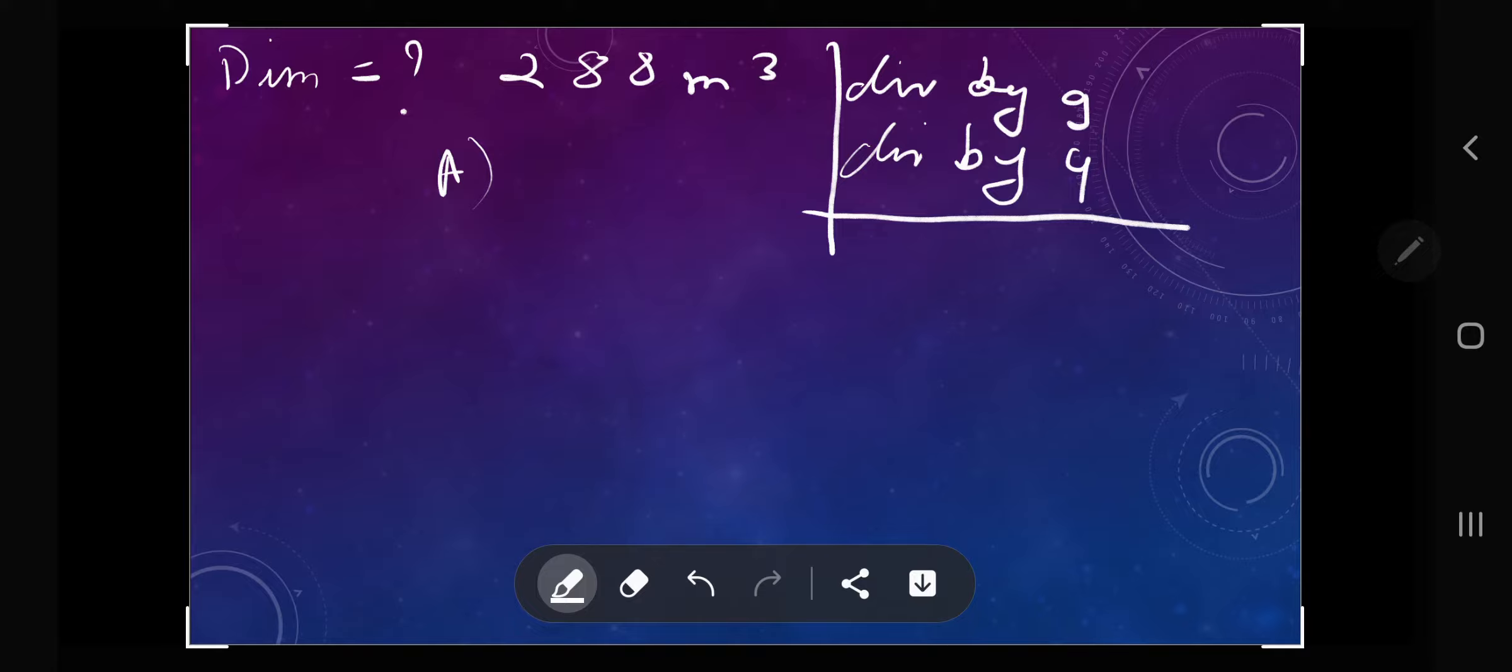Let's take a look at the options. We have 4 by 7 by 9. We know that 4 and 9 are present in 288, but how about 7? 7 times 4 is 28, then we are left with 8. 7 times 7 leaves a remainder of 1. Therefore A is not the solution.